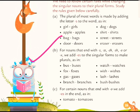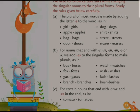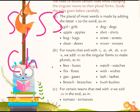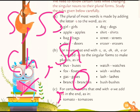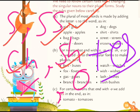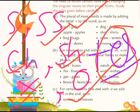Next rule dekhte hain. Rule B: jab bhi kisi word ke last mein S, SS, CH, SH, X, ya O aaye, toh usse plural banane ke liye ES add karte hain. Sabhi bachche dhyan dein — jab word ke end mein S, double S, CH, SH, X, aur O aata hai, us mein ES aayega plural banane ke liye. Chaliye, examples dekhte hain.